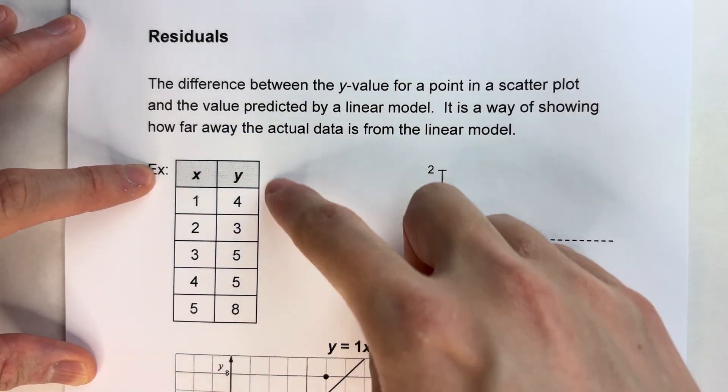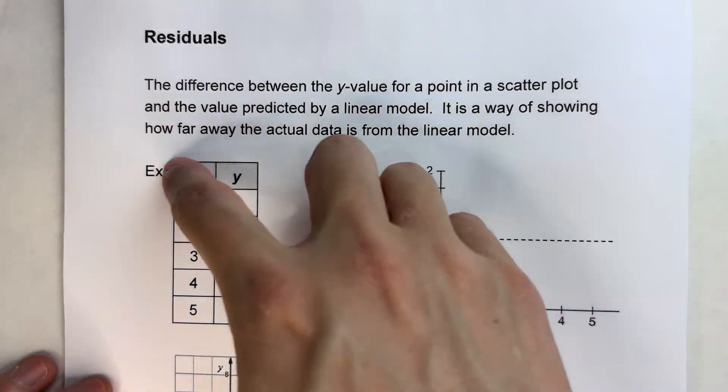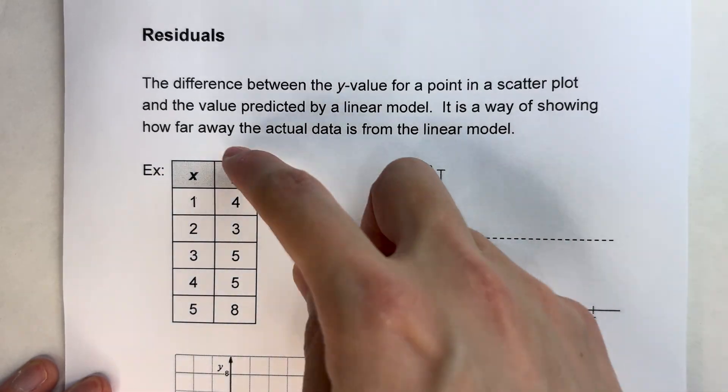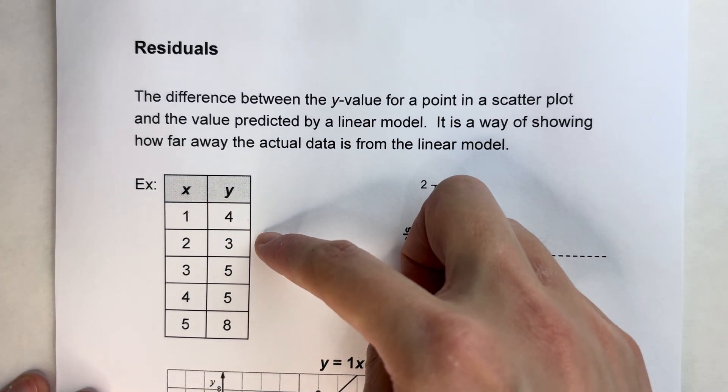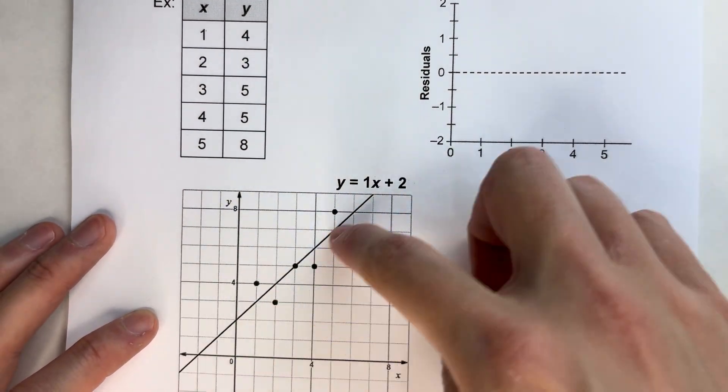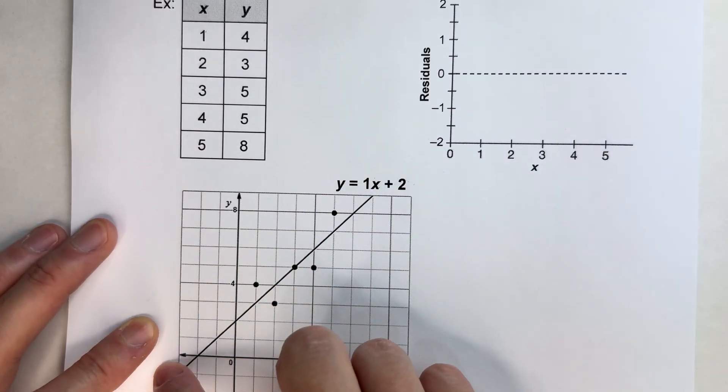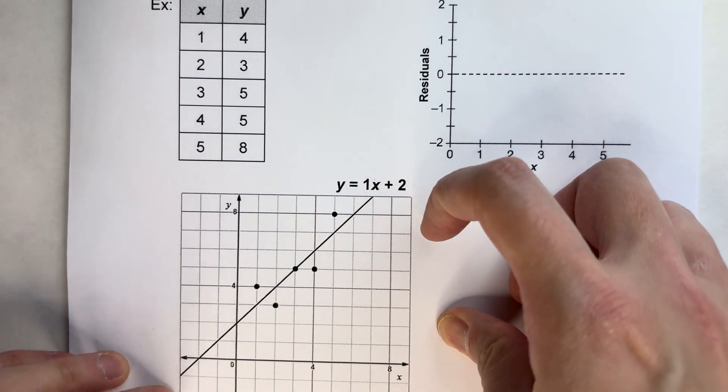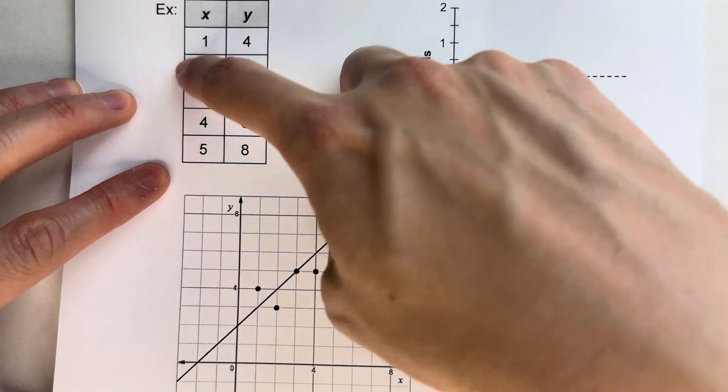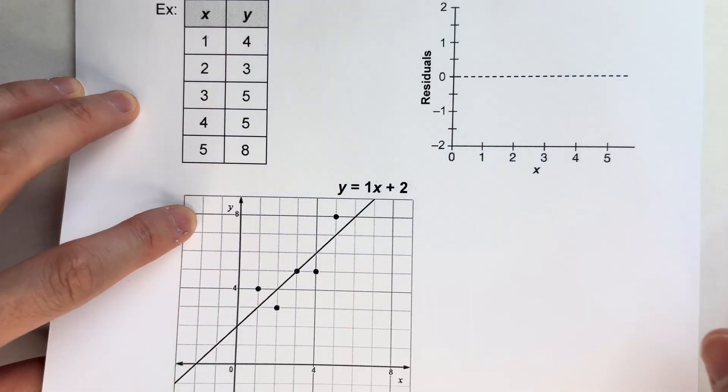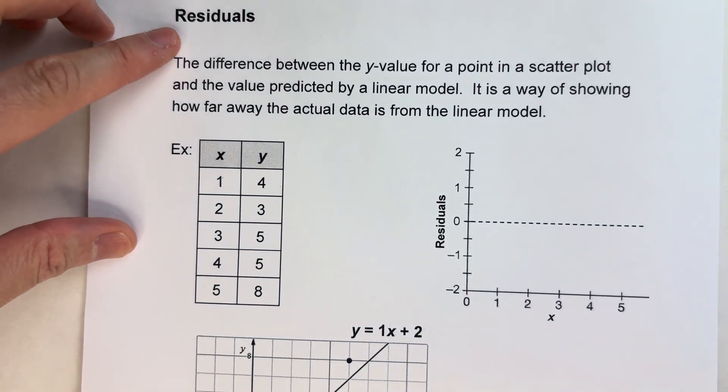So imagine you have a data set and you collected some data. This is the data of our actual example. But then we also have a best fit line or a trend line, which is our linear model. What we want to know is how close is the actual data to our model. And that's what residuals measure.